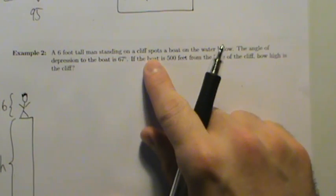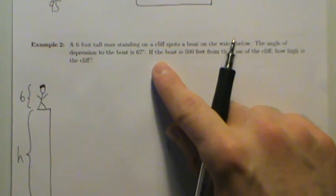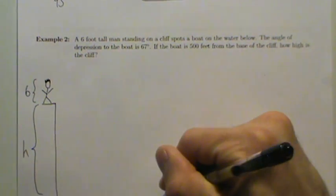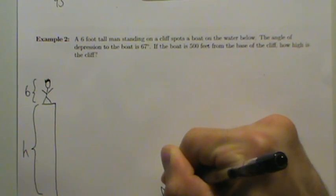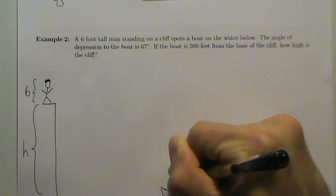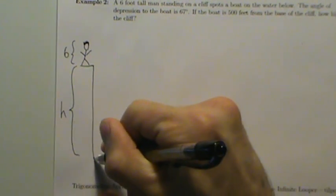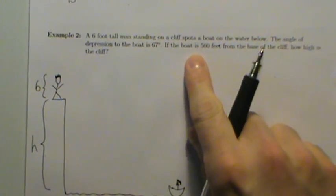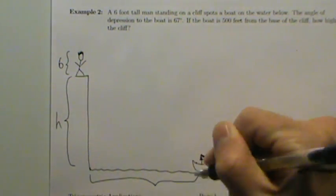This man standing on the cliff spots a boat on the water below, and the angle of depression to the boat is 67 degrees. He sees a boat down below, so we'll put the boat somewhere over here — a little sail right there. Here's the water, and we're told that the boat is 500 feet from the base of the cliff, so this right here is 500.